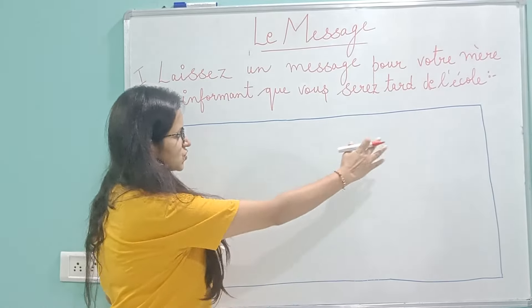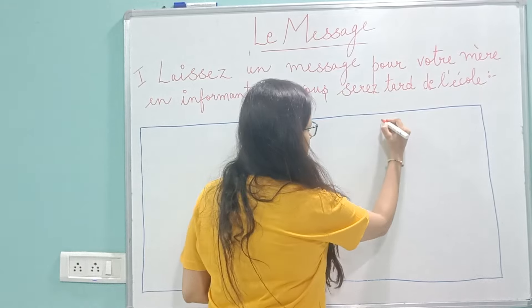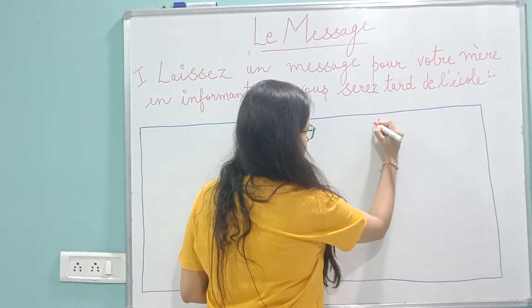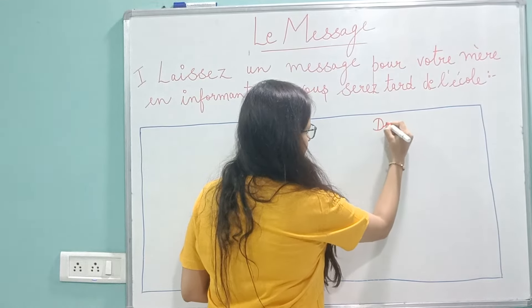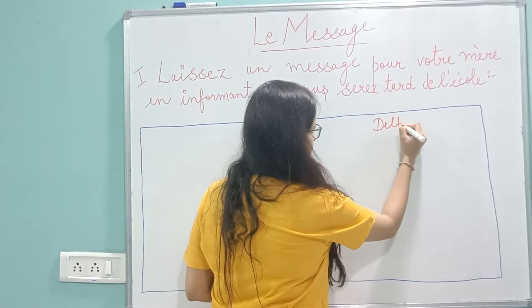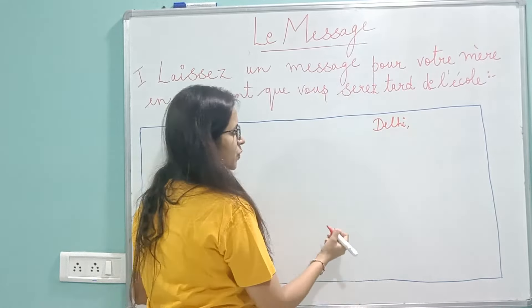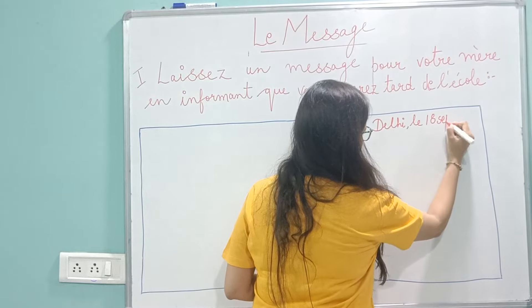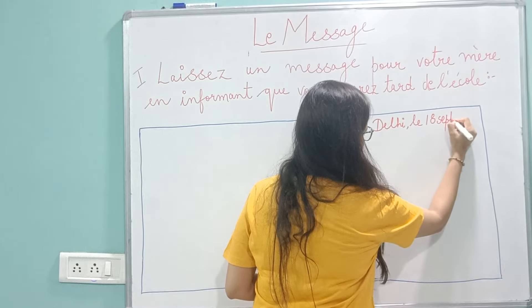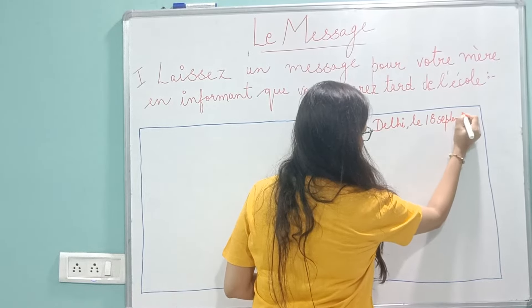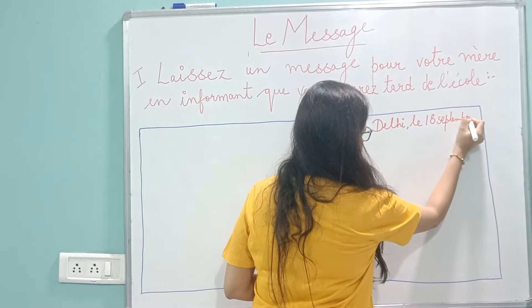On the extreme right side, you are going to write the place from where you are writing, followed by the date. For example, let's write September.